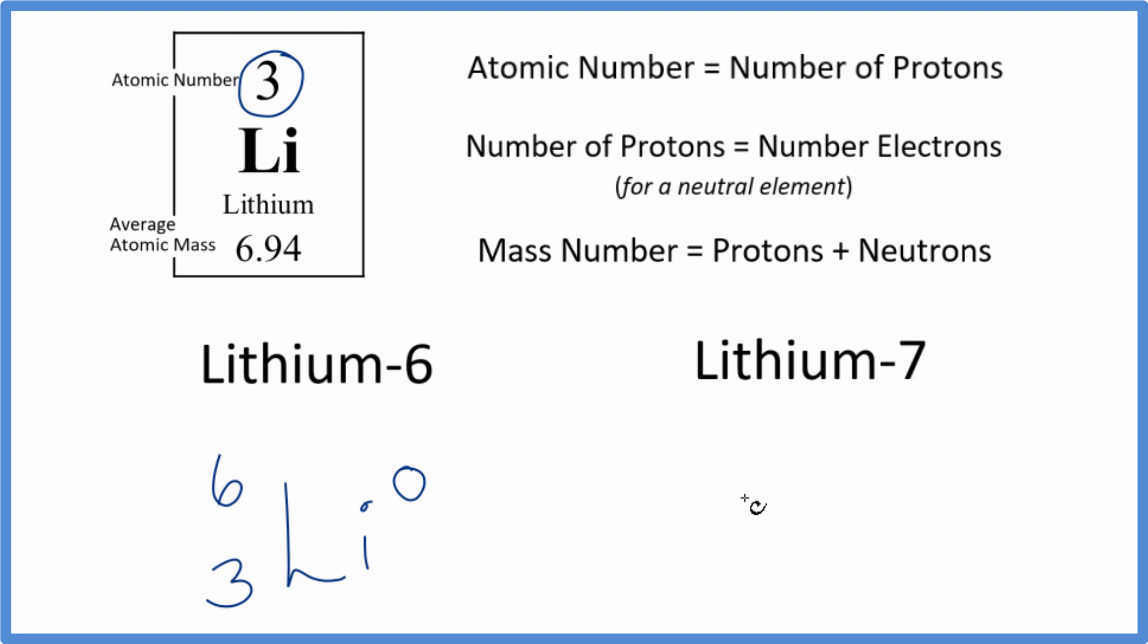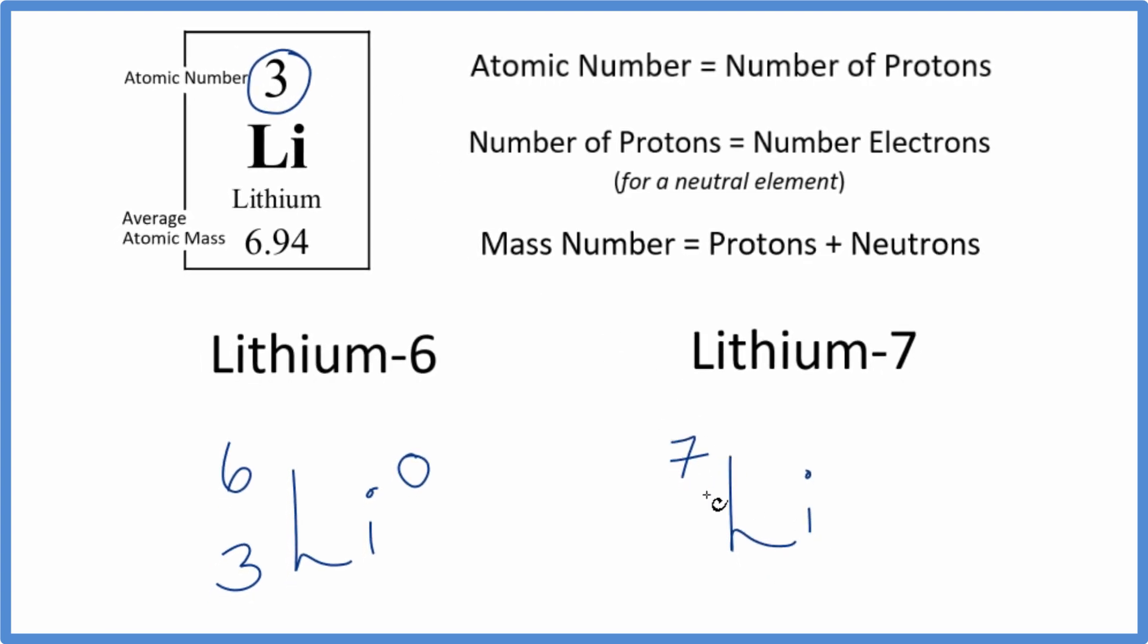For lithium seven, we write Li, that's the element symbol. And then for the mass number, that's right here in our hyphen notation, mass number of seven. And then for lithium, the atomic number is three. It's always three for lithium, that's the identity of lithium. We write that there. And again, this is neutral, there's no charge written, it doesn't say it's an ion. So we'll put a zero up here.